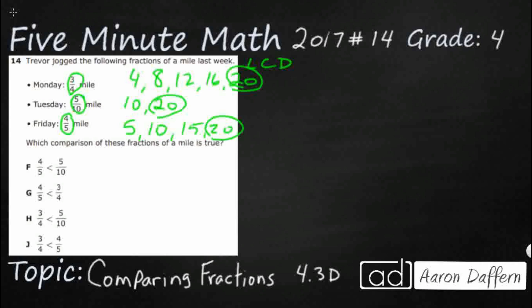We need to take our 3 fourths and convert it into 20ths. If we can get all of our fractions into 20ths, this is going to be really easy to compare. 4 times what makes 20? That's 5. So we're going to multiply by 5 over 5, because 5 over 5 is the same as 1. When you multiply anything by 1, it stays the same — we're just making it look different, cutting the pieces smaller. So 3 fourths is the same as 15 twentieths.